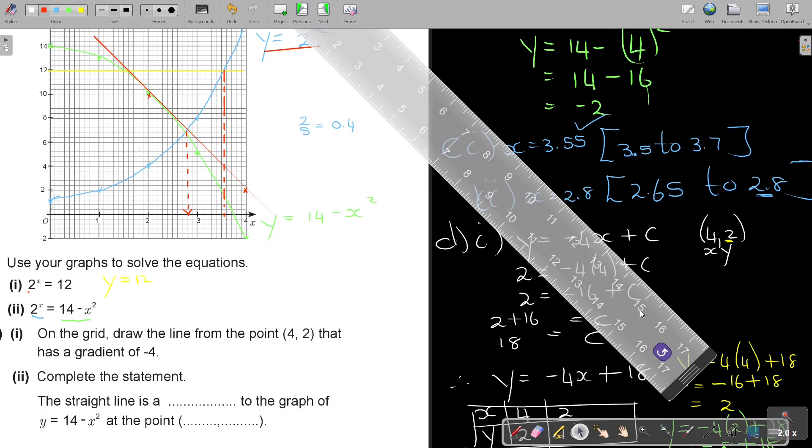Now the question was, on the grid, draw the line. Can you see what this red line is doing to the green line? Can you see it's a tangent? The touching point will be 2 and 10. So complete this statement. The straight line is a, what? What are we calling that? A tangent to the graph of this at the point, there was your point, 2 and 10.